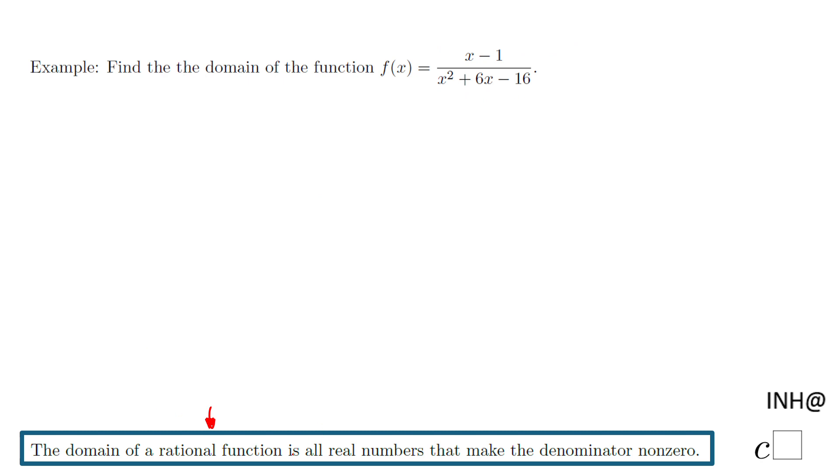The domain of a rational function is all real numbers that make the denominator non-zero. You might think about guessing numbers - 0, 2, 7, negative 7, negative 5 - and see which ones don't make the denominator zero. But this is a long way.